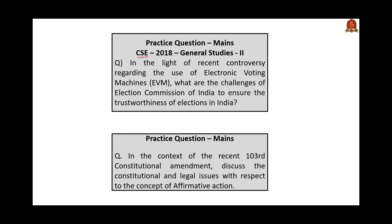The practice question under mains which appeared in the Civil Service Examination 2018 under General Studies Paper 2 asks: in the light of recent controversy regarding the use of electronic voting machines, what are the challenges before the Election Commission of India to ensure the trustworthiness of elections in India? The answer can be framed from the relevant points discussed in the EVM article. The next question asks: in the context of the 103rd Constitutional Amendment, discuss the constitutional and legal issues with respect to the concept of affirmative action. For answering this, refer to today's article discussion on the 10% quota.